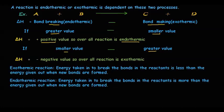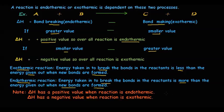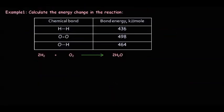To summarize: for an exothermic reaction, the energy taken in to break bonds in the reactants is less than the energy given out when new bonds are formed in the products. For an endothermic reaction, the energy taken in to break bonds is more than the energy released when new bonds are formed. ΔH is positive for endothermic and negative for exothermic reactions.